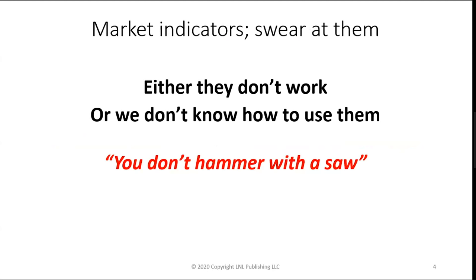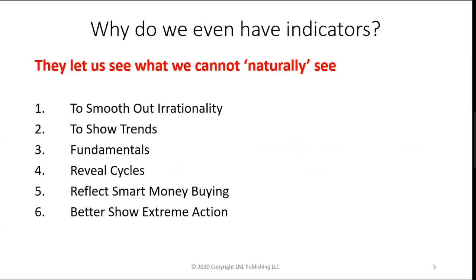Either indicators don't work or we don't know how to use them, and I think it's a little bit of each. There are clearly some indicators I've created myself that really don't work. You don't hammer with a saw — you need to know what your indicator can do and what it cannot do. Why do we even have indicators? Because they let us see what we naturally can't see. If you look at a chart, you can't really tell if it's overbought or oversold, especially in a sideways choppy market. Through applying mathematical principles to price action we can get a better idea of what's going on.